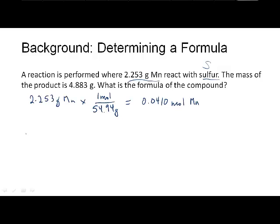Then you have to figure out how much sulfur there is. The grams of sulfur is how much mass was added. We started with 2.253 grams of manganese. We reacted it with sulfur, so sulfur was added. We ended up at 4.883 grams. So the grams of sulfur is 4.883 grams minus 2.253 grams.